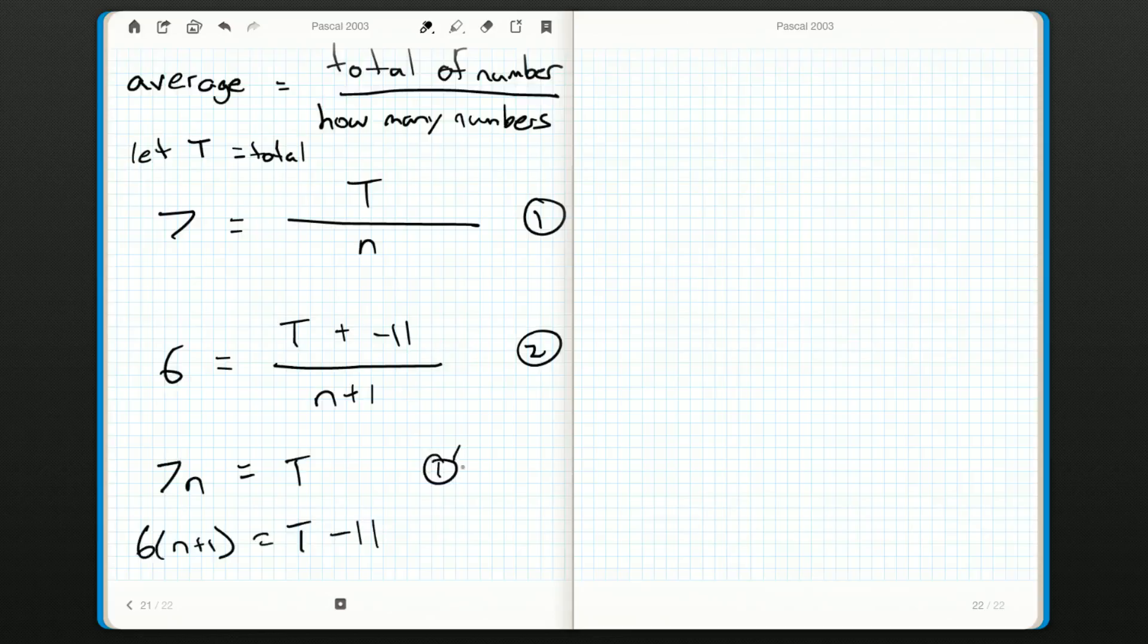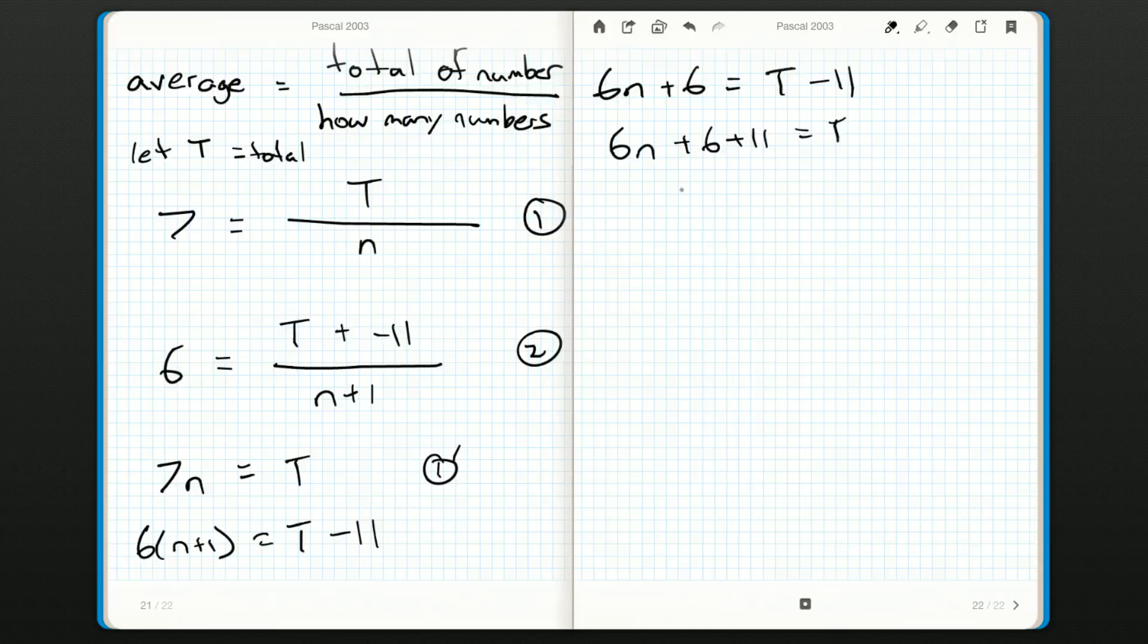We'll call this equation 1 prime. This one we're not done simplifying. 6n plus 6 is T minus 11. Let's bring the 11 over to the other side. 6n plus 6 plus 11 is equal to T, or 6n plus 17 is equal to T.